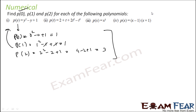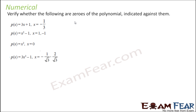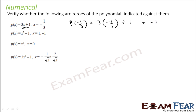Similarly, you can do the remaining ones — just put in the values; for example, replace all t with 0, then 1, then 2. Now let's check whether the following are zeros for given polynomials. For example, check whether minus 1 by 3 is a zero of 3x plus 1. Replace x with minus 1 by 3: 3 times minus 1 by 3 plus 1 equals minus 1 plus 1 equals 0. Yes, it is a zero.